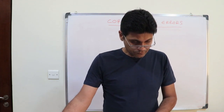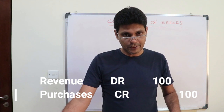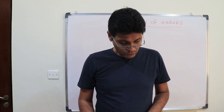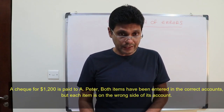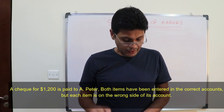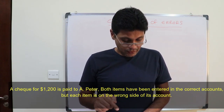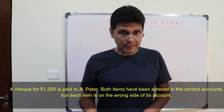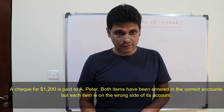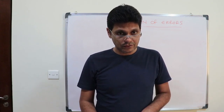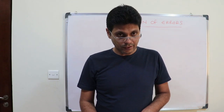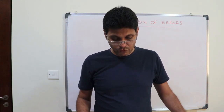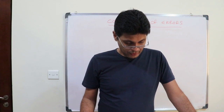Next one: a check for two hundred dollars is paid to A Peter. How is it entered in the accounts? As cash debit two hundred, A Peter credit two hundred. So it's a reversal of entry — why? Because they switched the double entry and did the opposite.